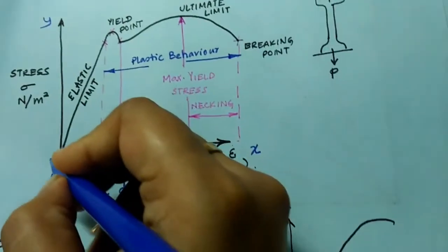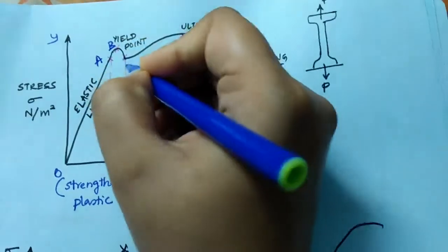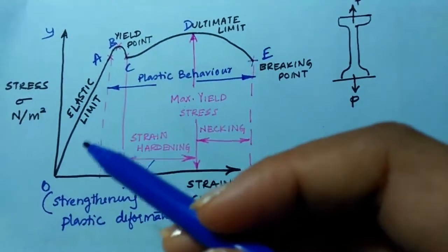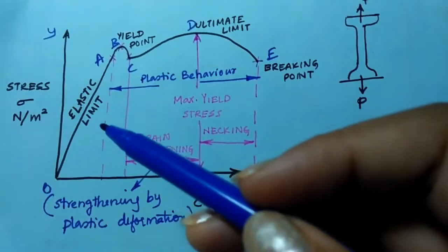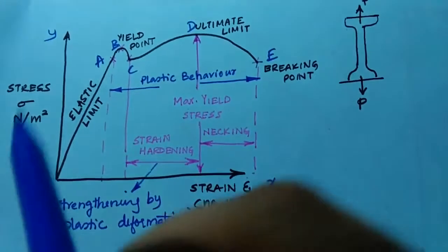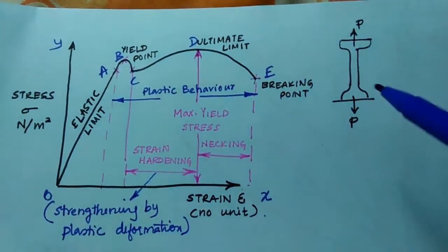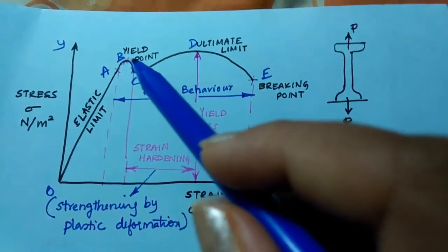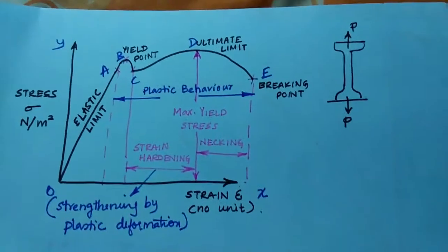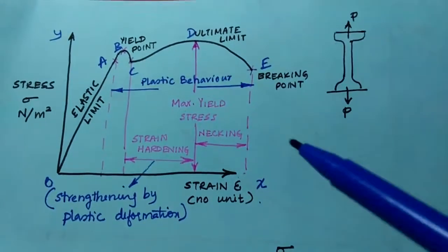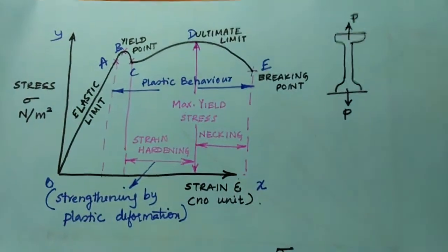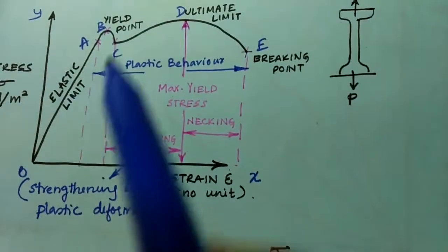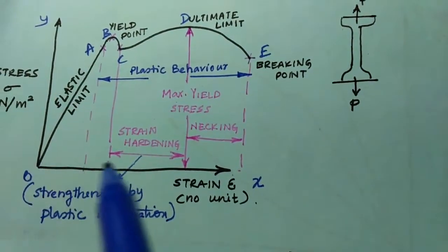Let's name the points on the curve: 0, a, b, c, d, e. The region from 0 to point a is called the elastic limit or limit of proportionality. As we keep on giving load on the material, after this limit what happens is that it increases some amount of stress with respect to strain, but when we release the load the material doesn't come completely back to its original position — it partially regains but not fully.